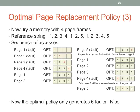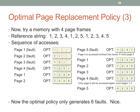We've established that the optimal policy is the best but unimplementable. Next time we'll finish discussing various approaches people have chosen to approximate this optimal replacement policy, and we'll also cover Belady's anomaly avoidance. See you next time.